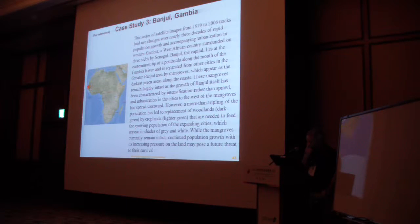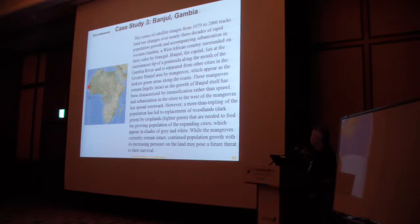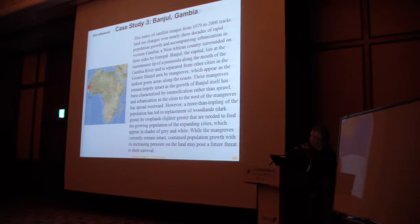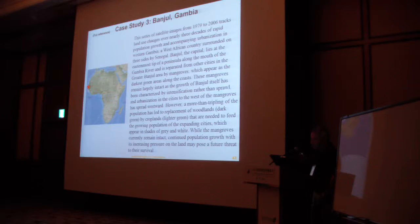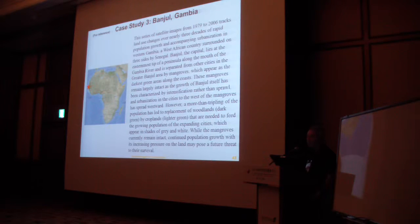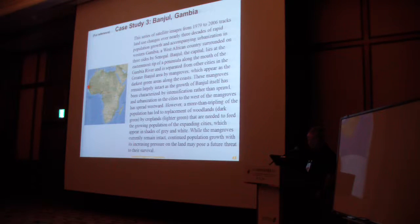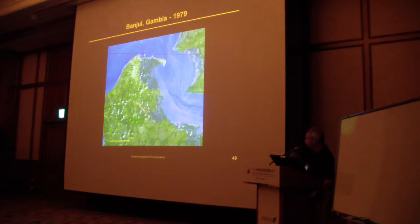The last case study is a series of images for Banjul, Gambia, which is in far west Africa. It's an interesting city because it lies essentially on the tip of a peninsula, surrounded first by mangroves and then forested areas. As we look at what happens over time, a huge increase in population has led to essentially the elimination of all the forest areas around it and growth of urban centers — but the mangroves have been preserved. Here it is in 1979, with the capital city sitting on the peninsula.